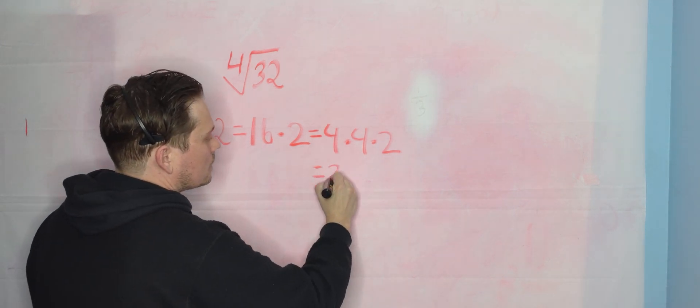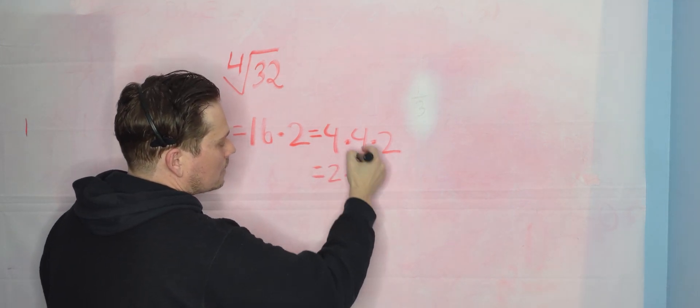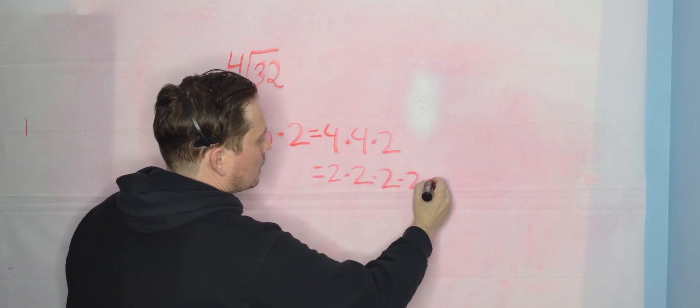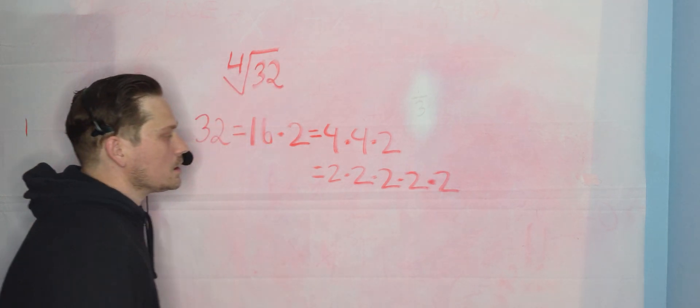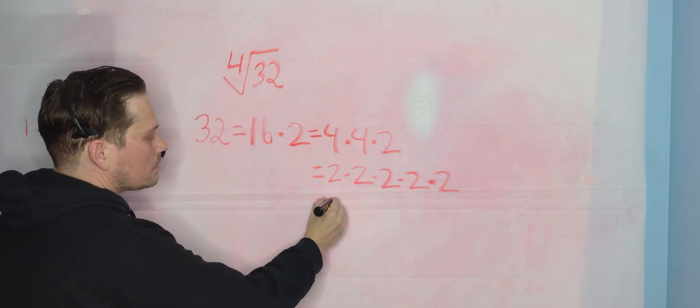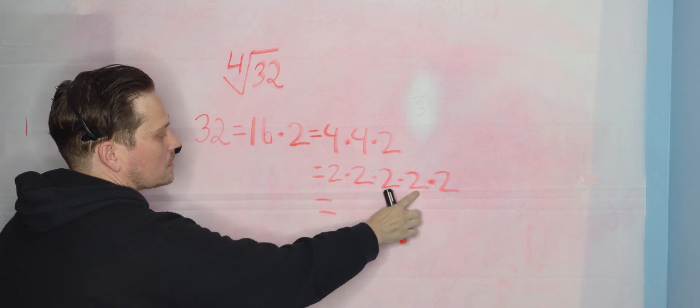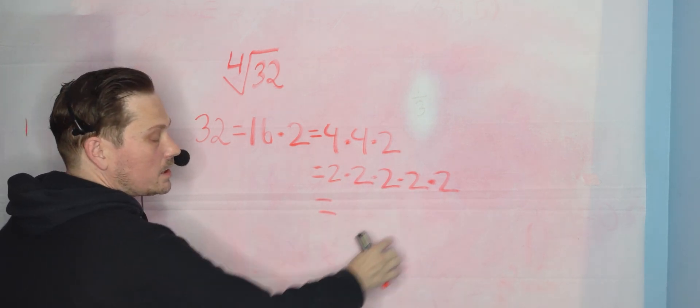So write the 4 now as 2 times 2. Write the other 4 as 2 times 2. And write that remaining 2 this way right here times 2. Now look at these 2's here on the bottom. Notice that there is one here and there's another one, another one, another one here, and now 2 remaining at the end.